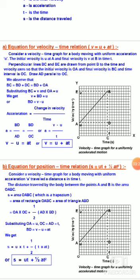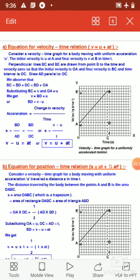Area OABC, which is a trapezium, equals area of rectangle OADC plus area of triangle ABD. Substituting OA equal to u, OC equal to AD equal to t, and BD equal to v minus u equal to at, we get s equals u times t plus half times t times at, giving s equals ut plus half at squared.